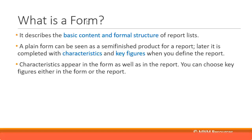A form describes the basic content and formal structure of report lists. Basic content refers to how each cell in the table is going to be populated. The formal structure covers what the columns are, how many rows, and what each column represents. You can also define calculations of columns and rows within the form.